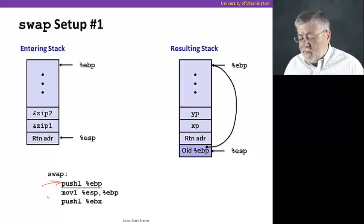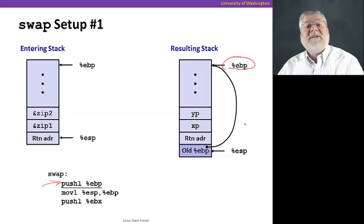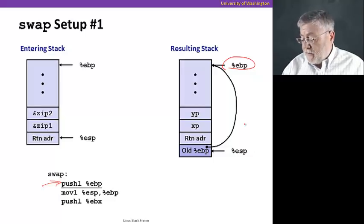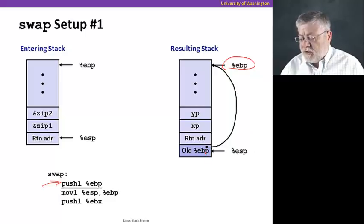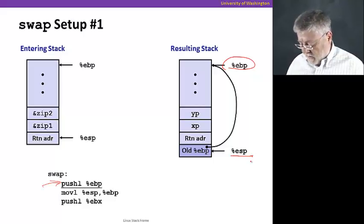So, what did EBP point to? Well, it was pointing to the base of the previous stack frame, the one for call_swap. And we've just saved that pointer onto the stack. And, of course, the push instruction also changed the value of ESP to now point to this new top of the stack.